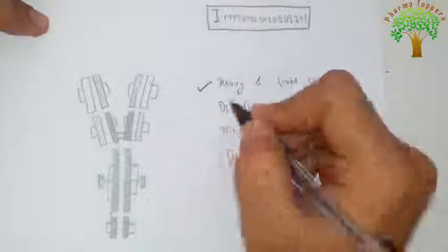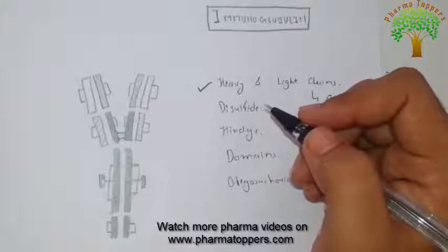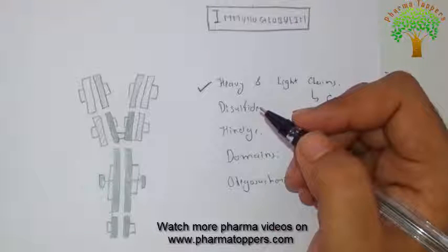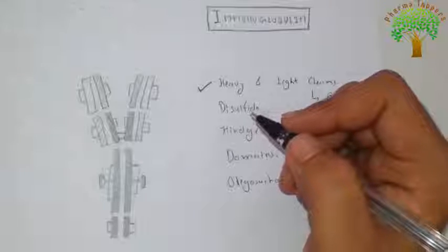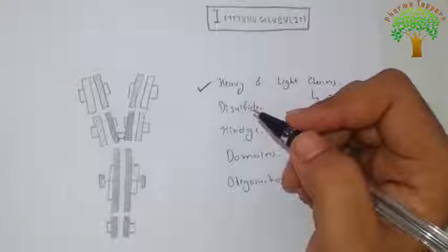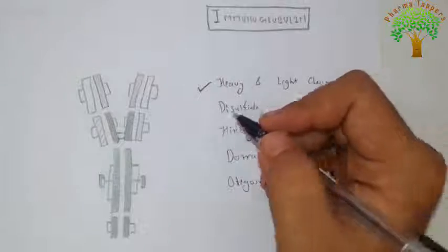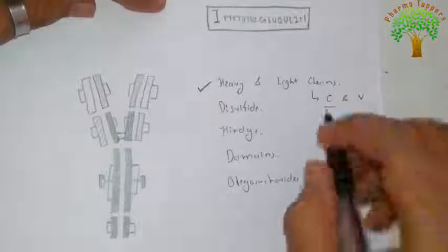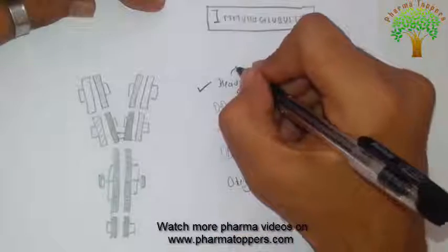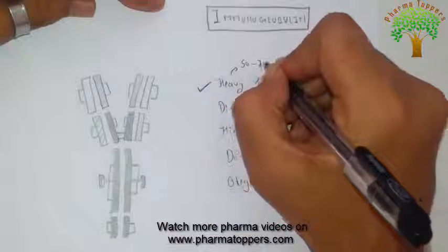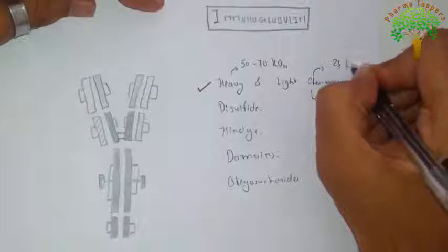Starting with heavy chains and light chains: all immunoglobulins have a four-chain structure as their basic unit — two heavy chains and two light chains — and they are composed of identical units. Heavy chains generally have a molecular weight of around 52 to 70 kDa, while light chains have a molecular weight of 23 kDa.